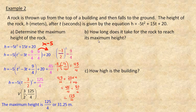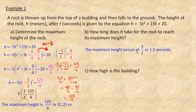In part B, you're asked how long it takes for the rock to reach its maximum height. The t-coordinate of the vertex is 3/2 — that's the time this height occurs at. So 3/2 or 1.5 seconds is the time that the maximum height occurs.